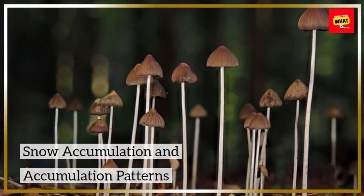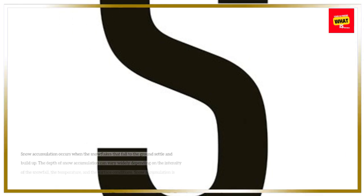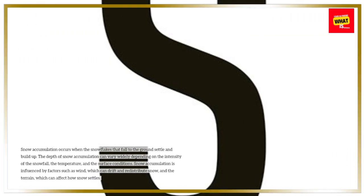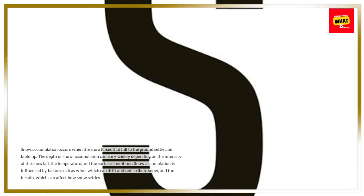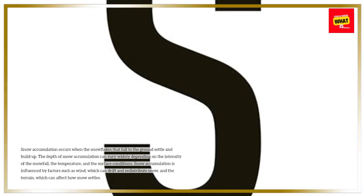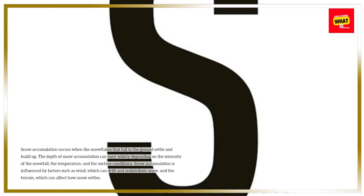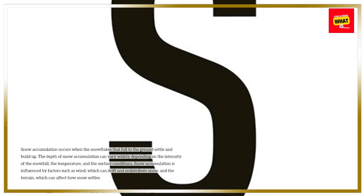Snow accumulation occurs when the snowflakes that fall to the ground settle and build up. The depth of snow accumulation can vary widely depending on the intensity of the snowfall, the temperature, and the surface conditions. Snow accumulation is also influenced by factors such as wind, which can drift and redistribute snow, and the terrain, which can affect how snow settles.